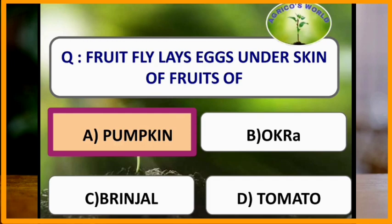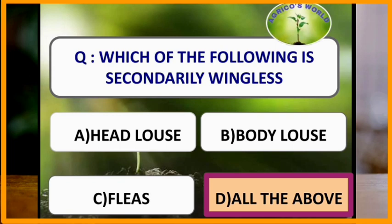Fruit fly lays eggs under the skin of pumpkin fruits. Which of the following is secondarily wingless? Head louse, body louse, and fleas — all three are secondarily wingless.